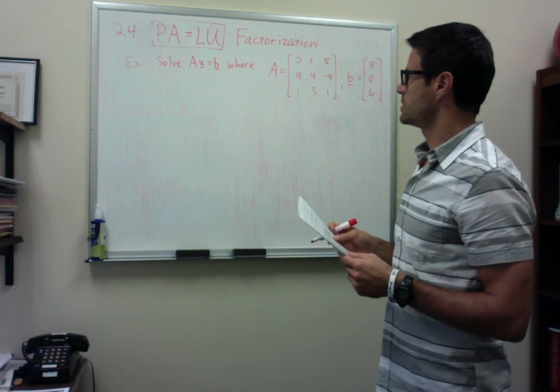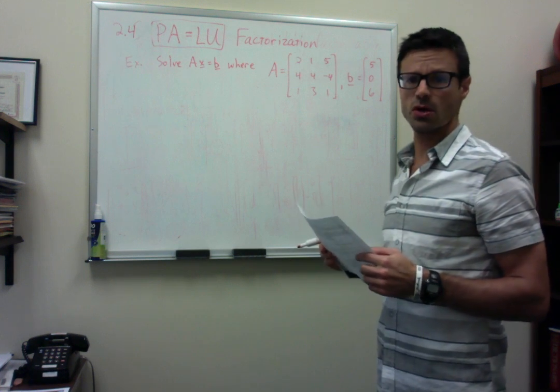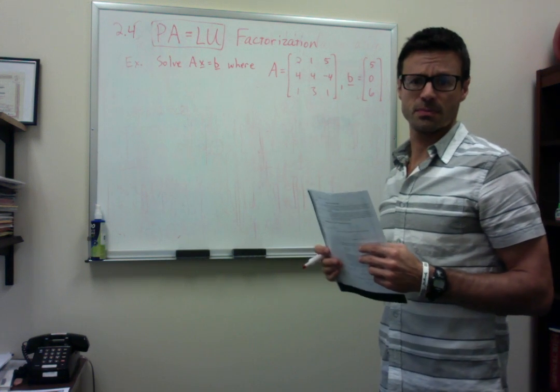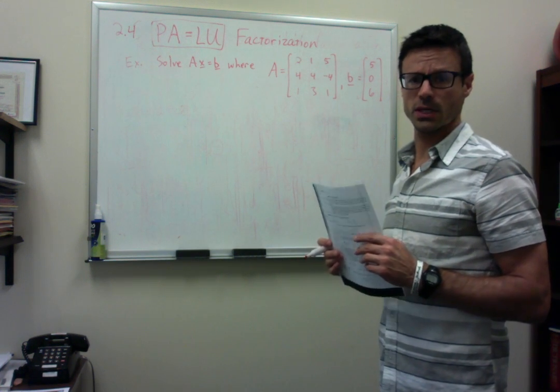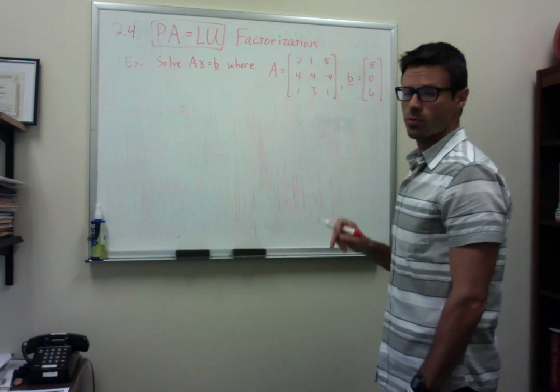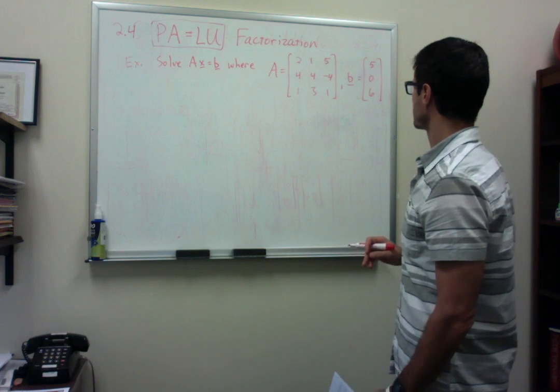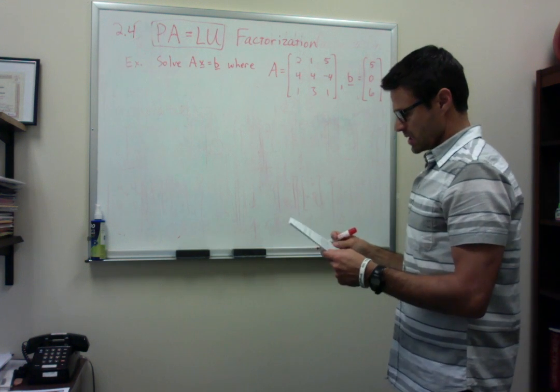Okay, so in this video we're going to use the PA equals LU factorization to solve a system of the form AX equals B. So we'll solve this system AX equals B where A is this matrix here where we just computed the PA equals LU factorization, and this is our vector B.